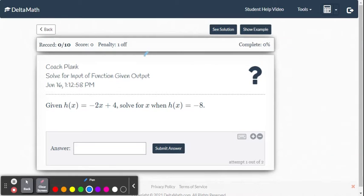This video provides instruction on how to solve for the input of a function given the output within the Delta Math online system. Here's our function h(x) equals negative 2x plus 4 to solve for x when h(x) equals negative 8.